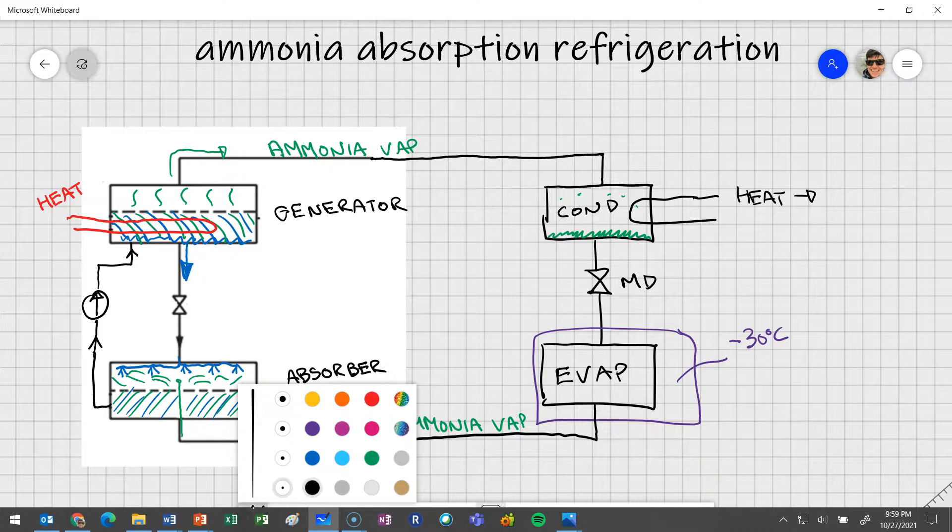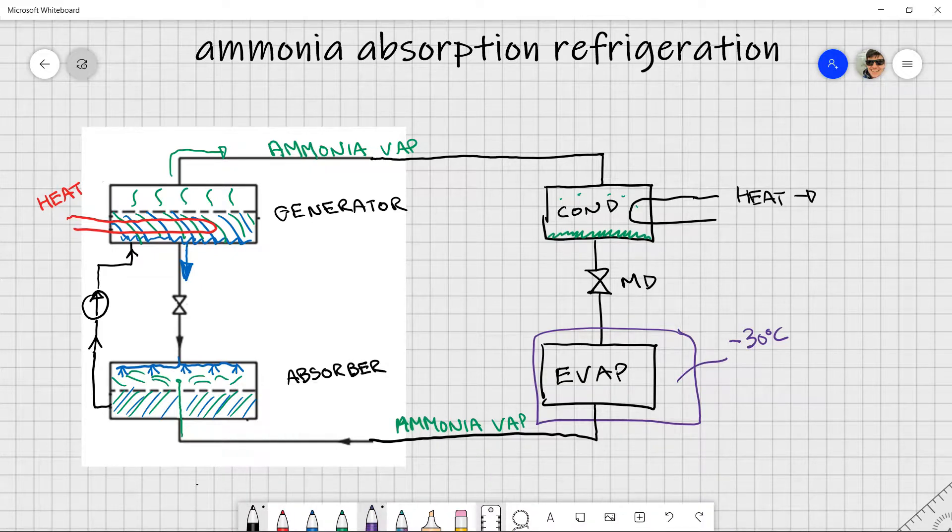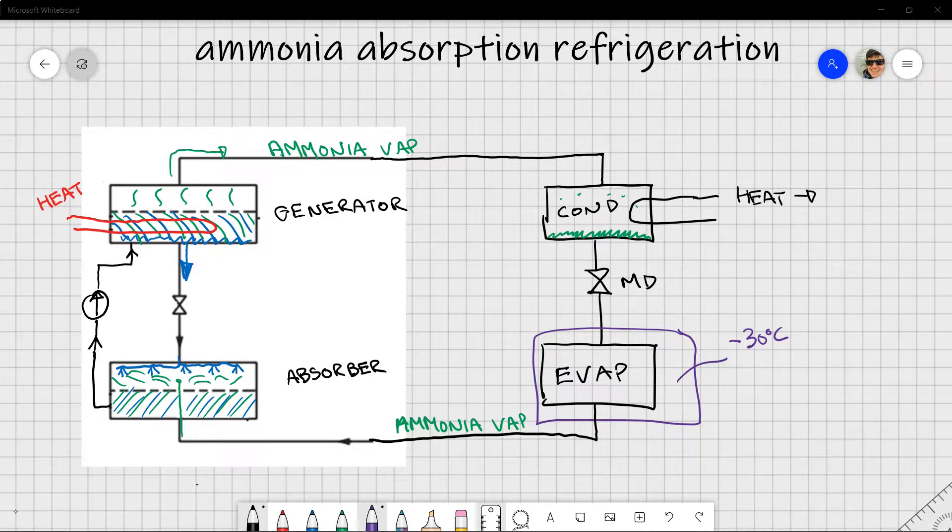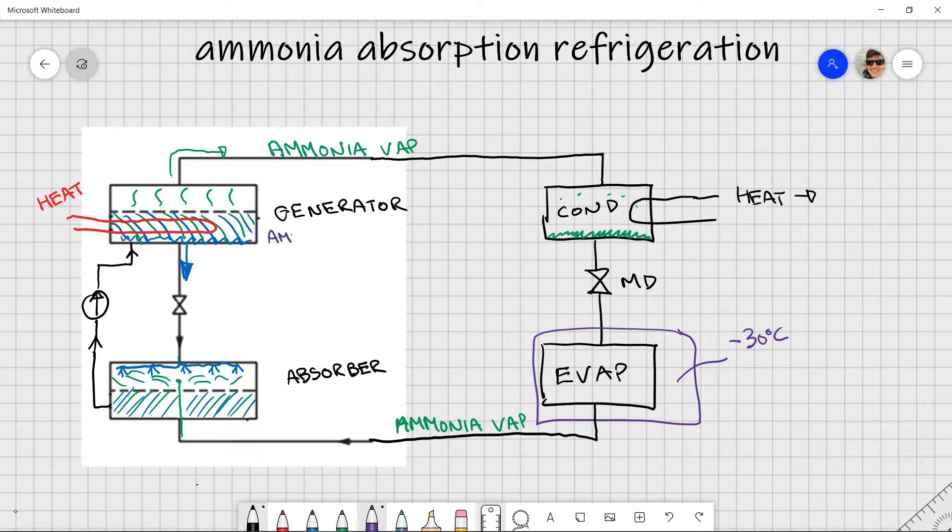And so we have some terms for those water mixtures. So up at the very top we have our lowest concentration of ammonia, which is essentially a low concentration of ammonia and that's what we would consider to be a weak solution and we call that a weak aqua solution. And down at the bottom here in the absorber where we have a higher concentration of ammonia we would consider that to be a strong aqua solution. So we have four new terms: we have our generator, we have our absorber, and we have our weak aqua and our strong aqua.